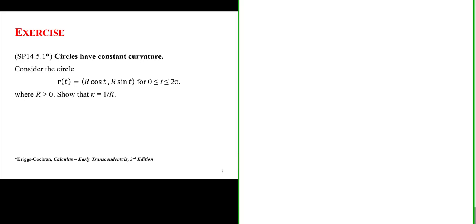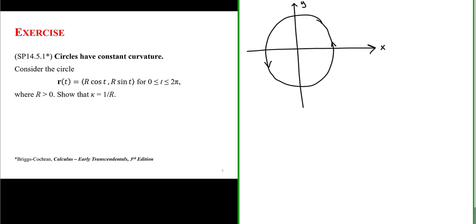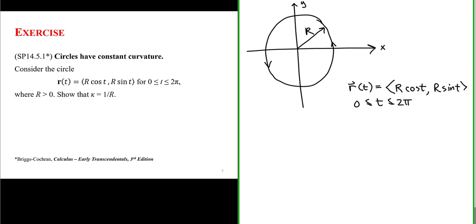Let's show that circles have constant curvature. A circle can be parameterized as the position vector function with an x component of r cosine of t and a y component of r sine of t, where r is the radius of the circle, for the parameter interval from 0 to 2π. We'll show that as long as r is greater than 0, the curvature is a constant value equal to 1 over the radius of the circle.